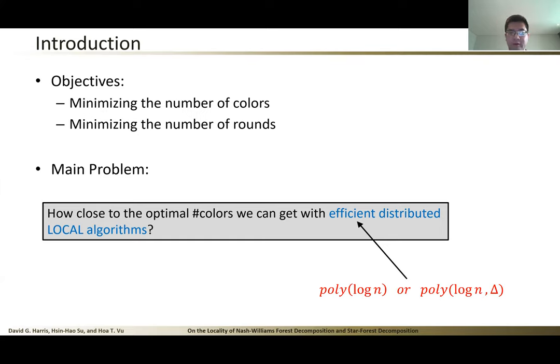The main question we are going to ask is how close to an optimal number of colors we can get with efficient distributed algorithms. By efficient, we mean polylog n or polylog n times polylog Δ times poly Δ.